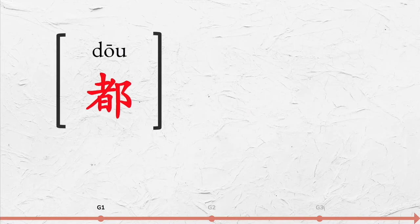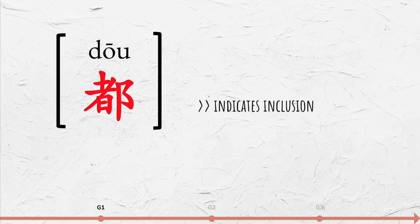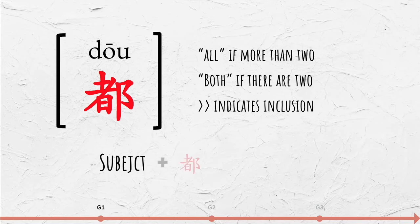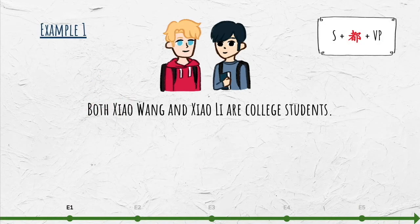都 indicates inclusion — 'all' if there are more than two, or 'both' if there are two. It is placed before the verb. The structure is: subject + 都 + verb phrase.